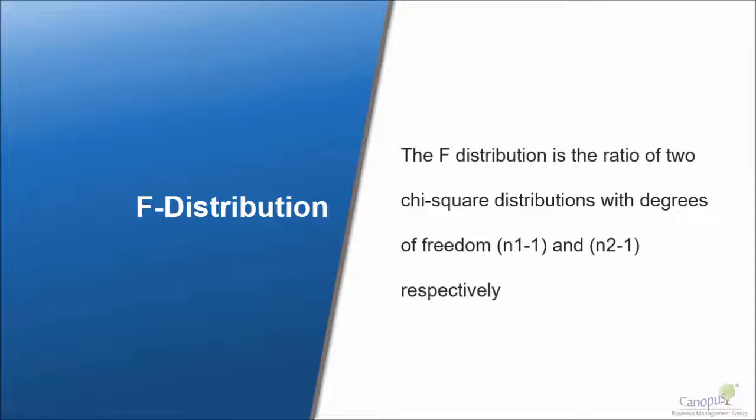An F distribution is nothing but a ratio of two chi-square distributions with different degrees of freedom. We just learned about what a chi-square distribution is. When we take two chi-square distributions and find a ratio of them, that is when we get an F distribution.